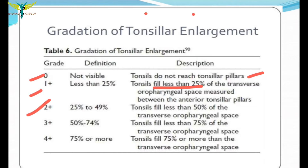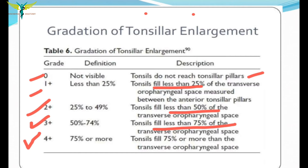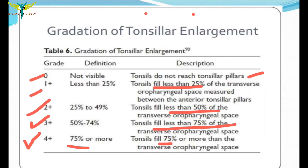Grade two plus is when the tonsil is enlarged from 25 to 49 percent, filling less than 50 percent of the transverse oropharyngeal space. Grade three plus is when tonsillar enlargement is 50 to 74 percent, filling less than 75 percent of the transverse oropharyngeal space. Grade four plus is when enlargement is greater than 75 percent, with tonsils filling more than 75 percent of the oropharyngeal space.